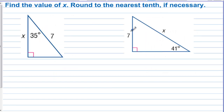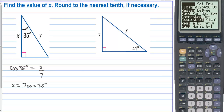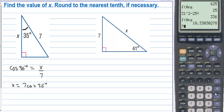Find the value of x, rounding to the nearest tenth if necessary. We have a hypotenuse of 7 and a missing adjacent side, with an angle of 35 degrees. In relationship to 35 degrees, we have the adjacent side and the hypotenuse — that's cosine. So cosine of 35 degrees equals adjacent over hypotenuse, and we multiply both sides by 7. Make sure your calculator is in degrees mode. Seven times cosine of 35 degrees equals 5.7.